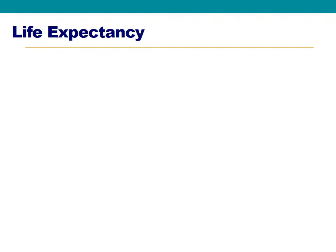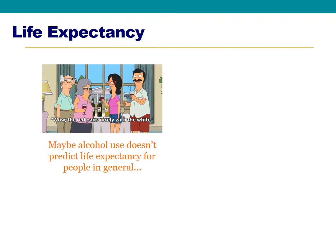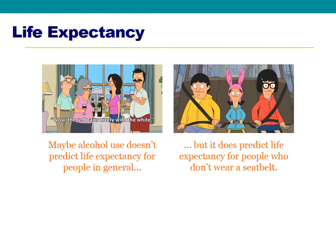At the end of last class we started talking about the possibility that different predictors might interact with each other. For example, we found no overall relationship between alcohol use and life expectancy, but maybe alcohol use predicts life expectancy for some people but not others — perhaps for people who don't regularly wear a seat belt but not for those who do. In other words, the relationship between alcohol use and life expectancy may depend on which group you're in, putting us in the realm of interactions.